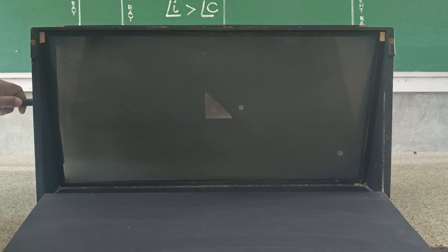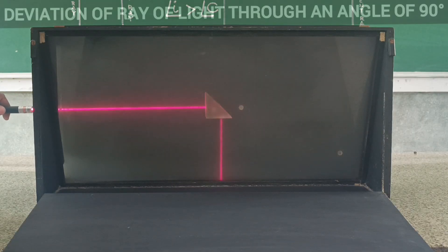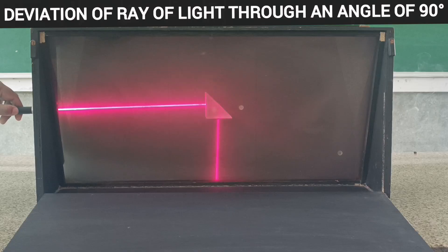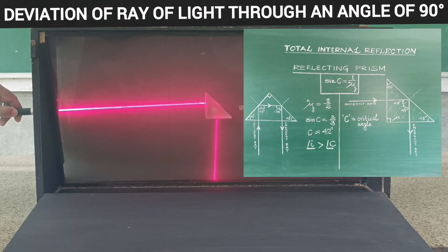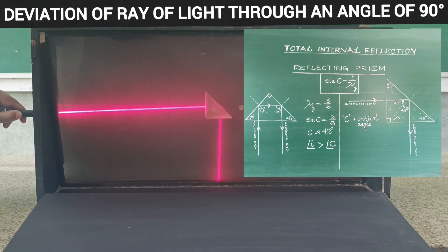These particles scatter some of the light in different directions, making the path of the beam visible to the human eye. In the darkened room, this creates a clear, illuminated trace that can be observed and analyzed against the dark background of the box.